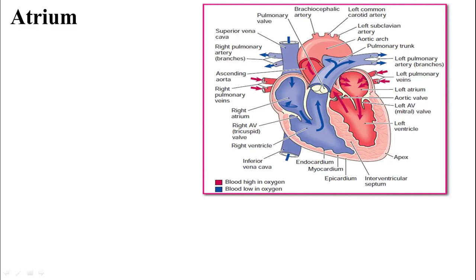The atrium is an upper chamber of the heart. We have the right atrium and the left atrium. The right atrium receives blood from the upper part of the body by way of the superior vena cava, and from the lower part of the body by way of the inferior vena cava. The superior vena cava and inferior vena cava empty blood low in oxygen into the right atrium, and then the blood is sent to the right ventricle.